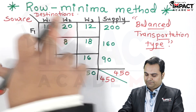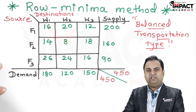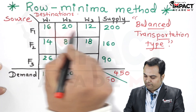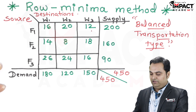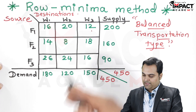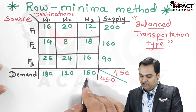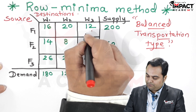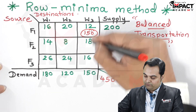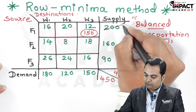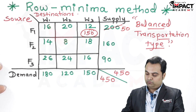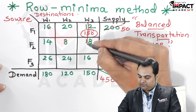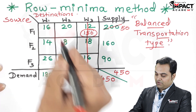In the Row Minima method, from the first row we select the minimum cell value, which is 12. Looking at this cell, the demand is 150 and the supply is 200, so the demand can be completely met — 150 is allocated here, leaving a remaining supply of 50. Since the total demand for that column has been met, we cancel this entire column.